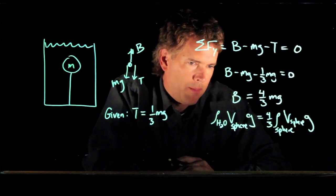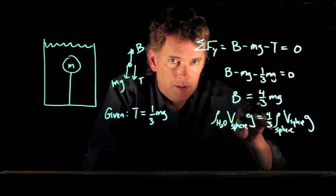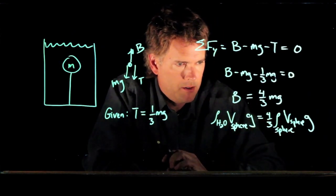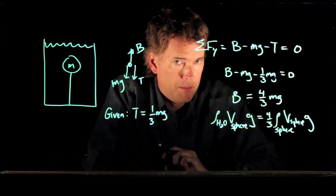And now look what happens. A bunch of stuff cancels out, right? V sphere is on both sides, that cancels out. G is on both sides.